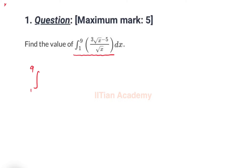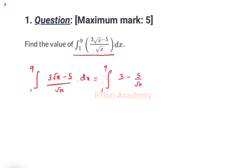The limits are ranging from 1 to 9. So this is the integral of (3 root x minus 5) divided by root x, multiplied by dx. We can further simplify this as 3 minus 5 by root x, multiplied by dx.